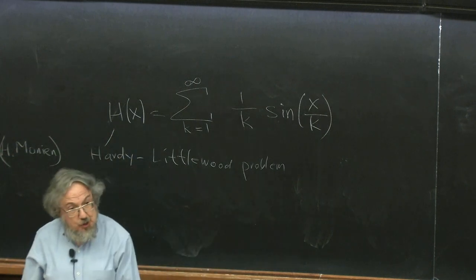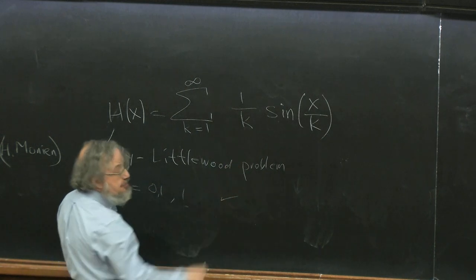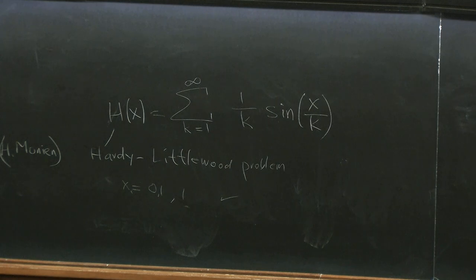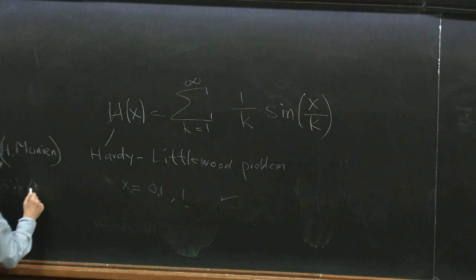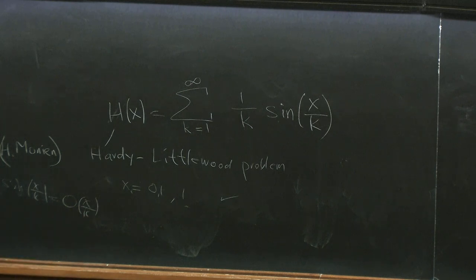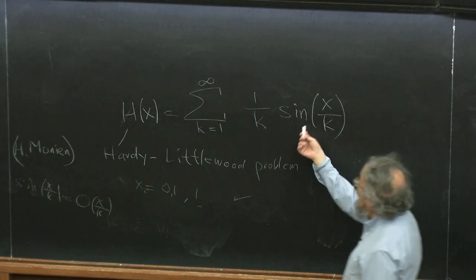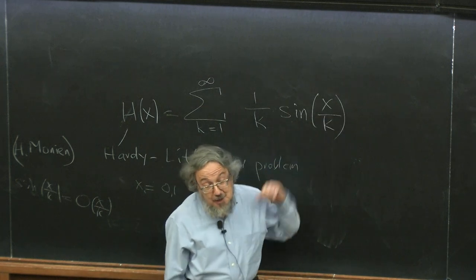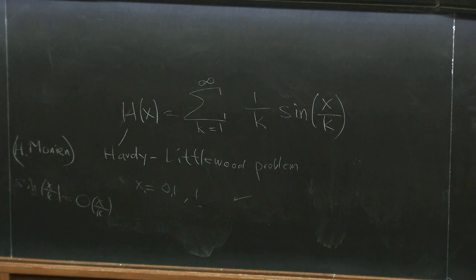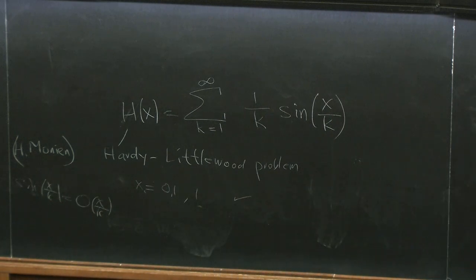Obviously if x is 0.1 or even 1, there's no problem because this series obviously converges once k is bigger than x. Sine of x over k is O(x/k) with a universal bound like 2, and therefore this series converges like 1/k². But the problem is if x is very large. In order to do that directly, you have to wait till the terms start getting small, and the terms only get small when k is much bigger than x. If x is a million, you already have to take many more than a million terms.